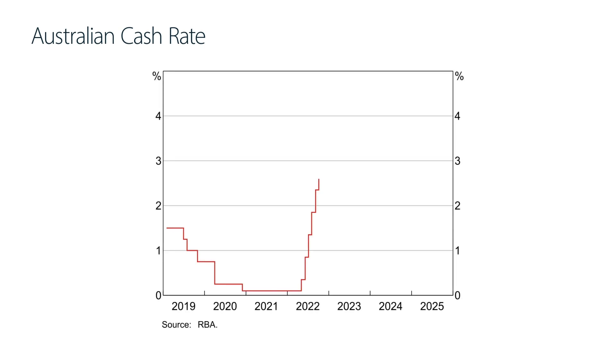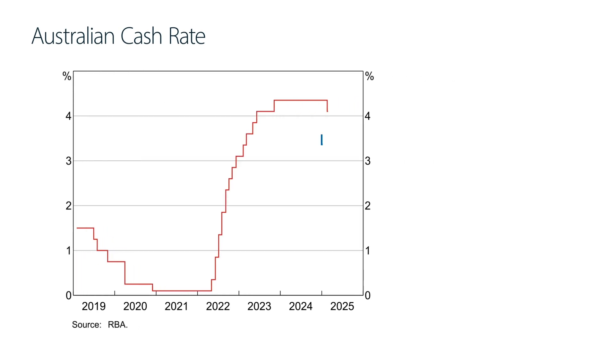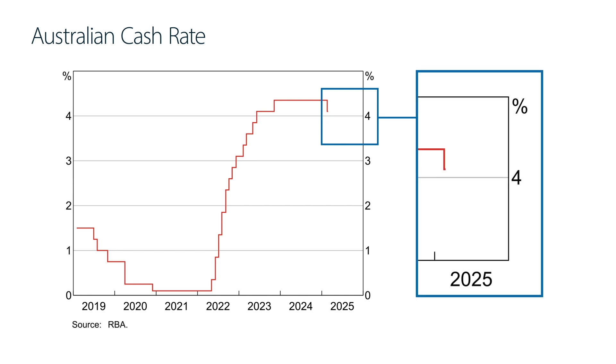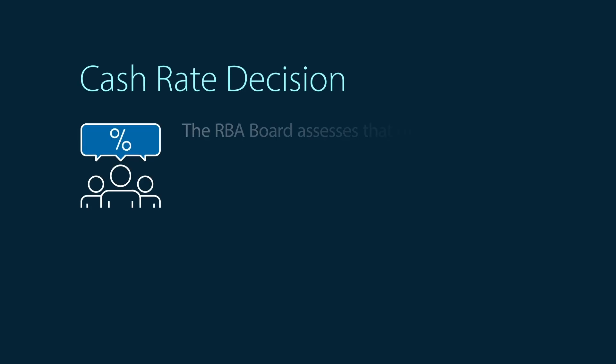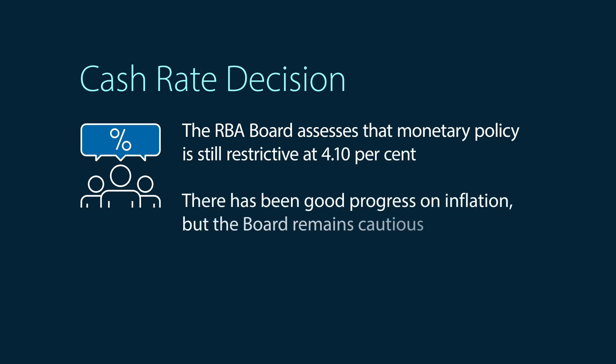Let's finish with an update on monetary policy. At its February meeting, the RBA board decided to cut the cash rate by 25 basis points to 4.1%. Prior to this meeting, the cash rate — Australia's official interest rate — had been on hold at 4.35% since November 2023. While the cash rate has been reduced, the RBA board assesses that monetary policy is still restrictive at 4.1%. There has been good progress on inflation, but the board remains cautious. In terms of future interest rate movements, the board will continue to look at the data and see if the economy and inflation continue to evolve as expected.